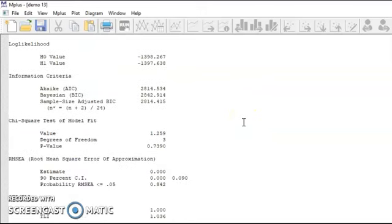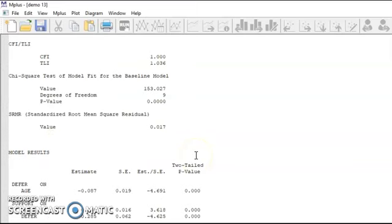So the first thing to look at is, as I mentioned, it's good to look at the chi-square test to see if this model fits the data well. And we can see that the p-value is not statistically significant. So what that means is the model, the implied covariance matrix, and the data covariance matrix are not statistically significantly different. And so, therefore, this is a good-fitting model.